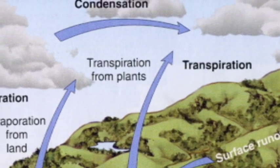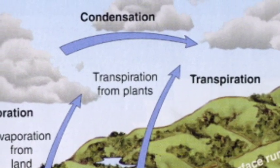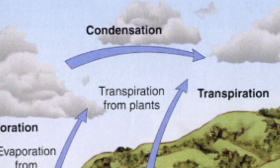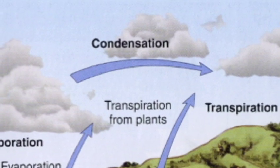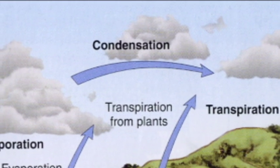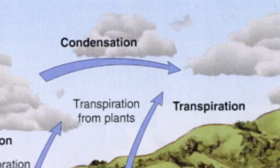Then, condensation occurs, in which falling temperatures cause the evaporated water to condense into tiny droplets that form clouds or fog. The air must contain condensation nuclei, tiny particles on which droplets of water can collect. The temperature at which condensation can occur is called the dew point.